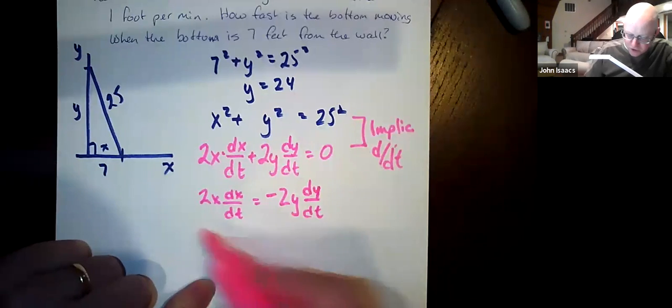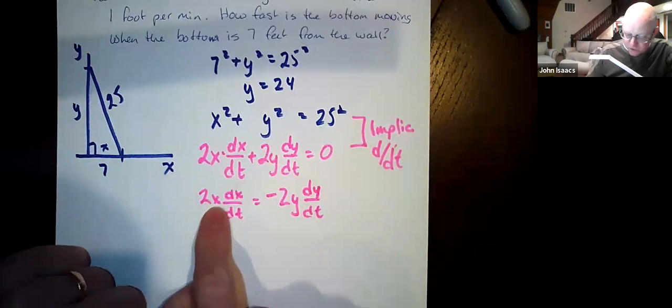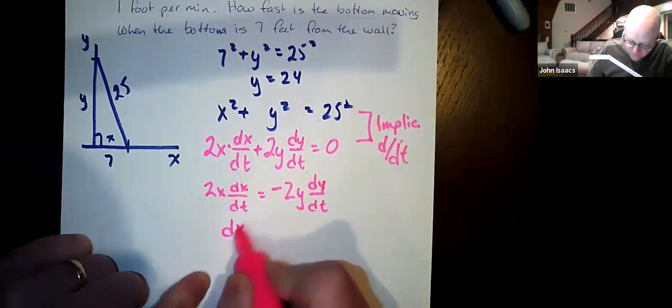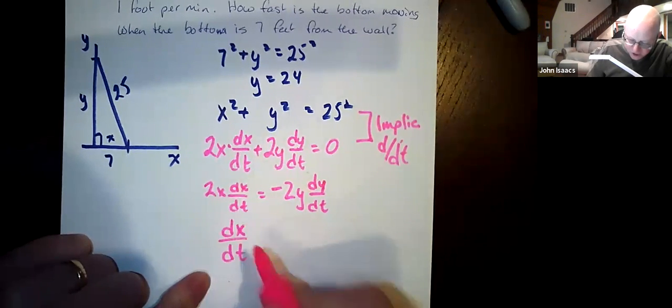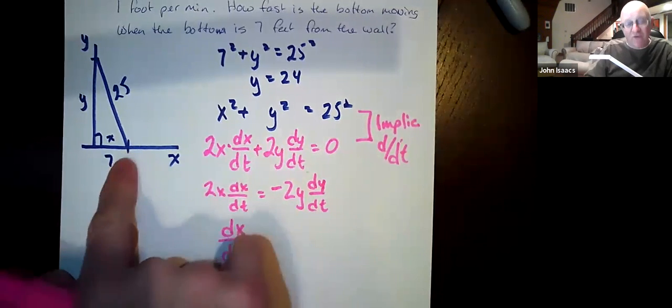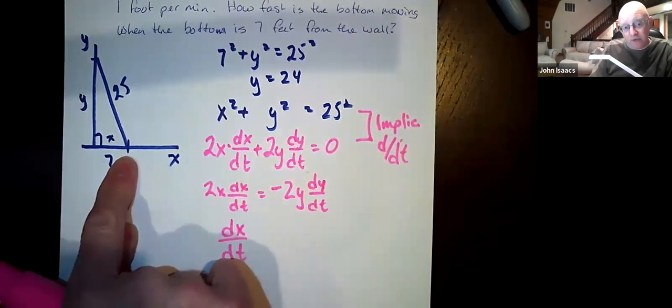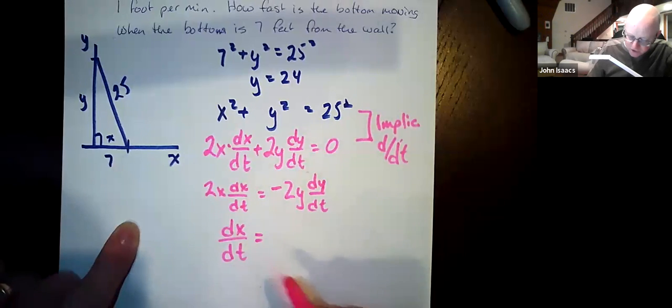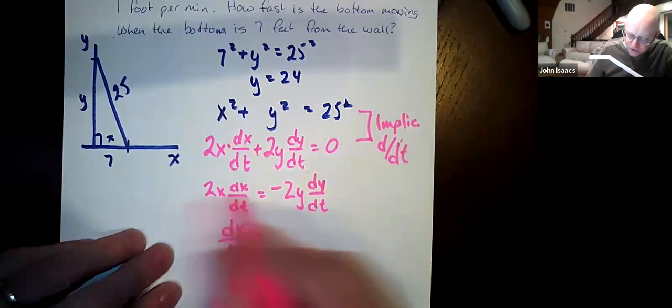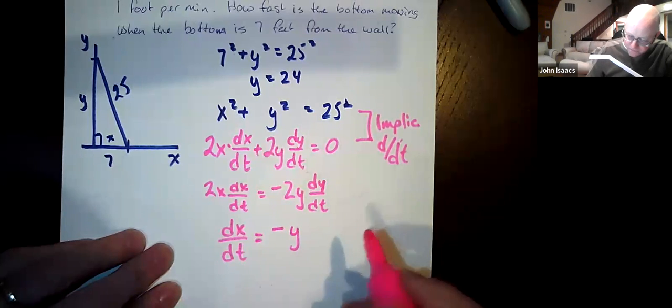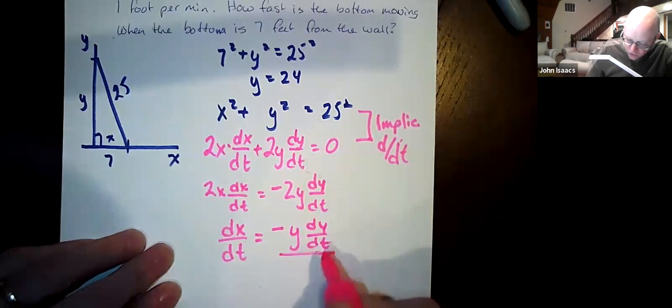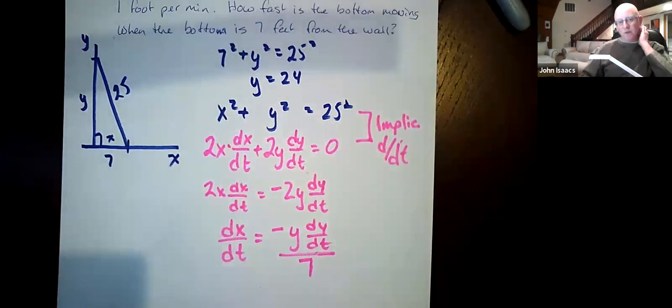So let's say 2x dx/dt = -2y dy/dt. And the 2s are going to go away because we're going to divide by 2. And we're also going to divide by x, right? So dx/dt, the change in x as time goes by, how fast the base of this ladder is moving per second. That's dx/dt. How fast the base of this ladder is moving is dx/dt, is equal to the y's are going to cancel. So -y dy/dt all over x, okay?